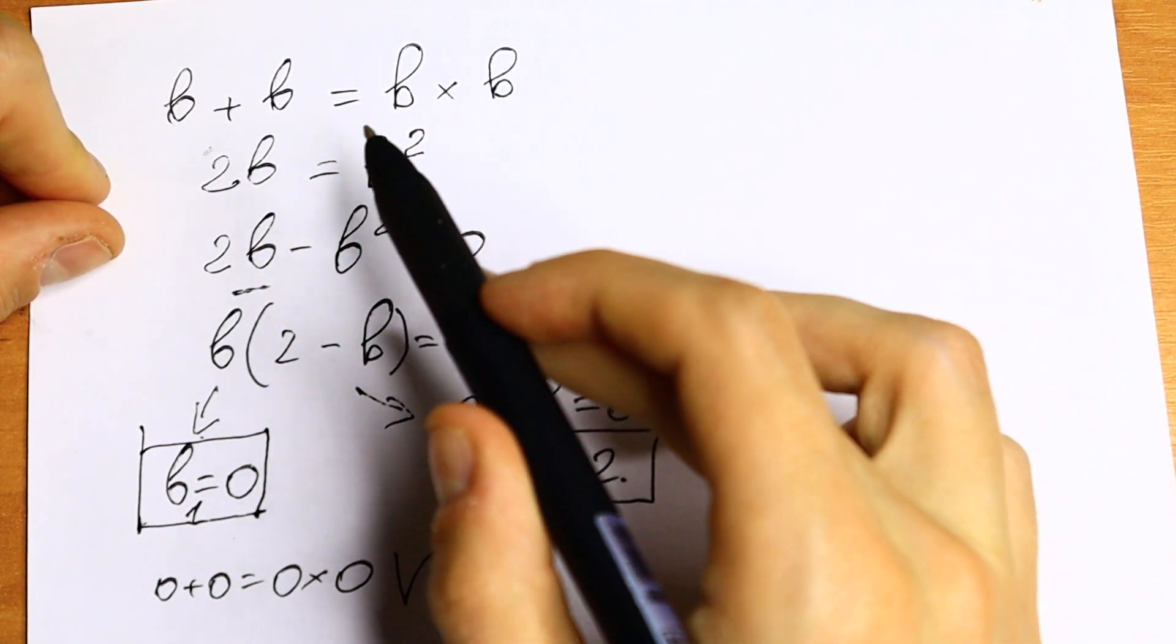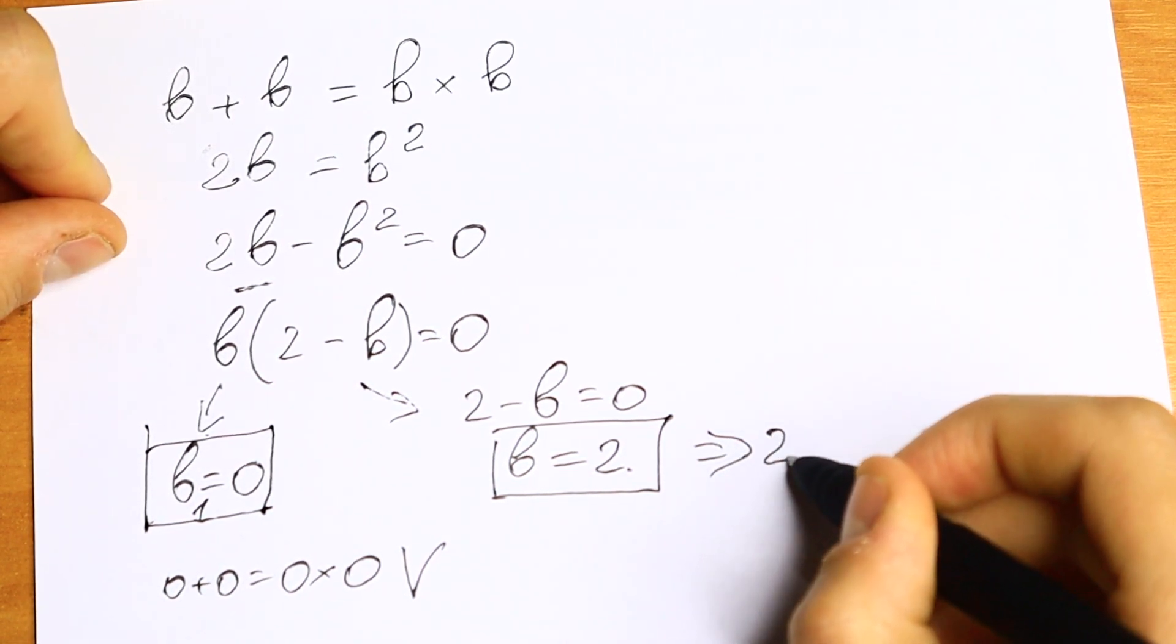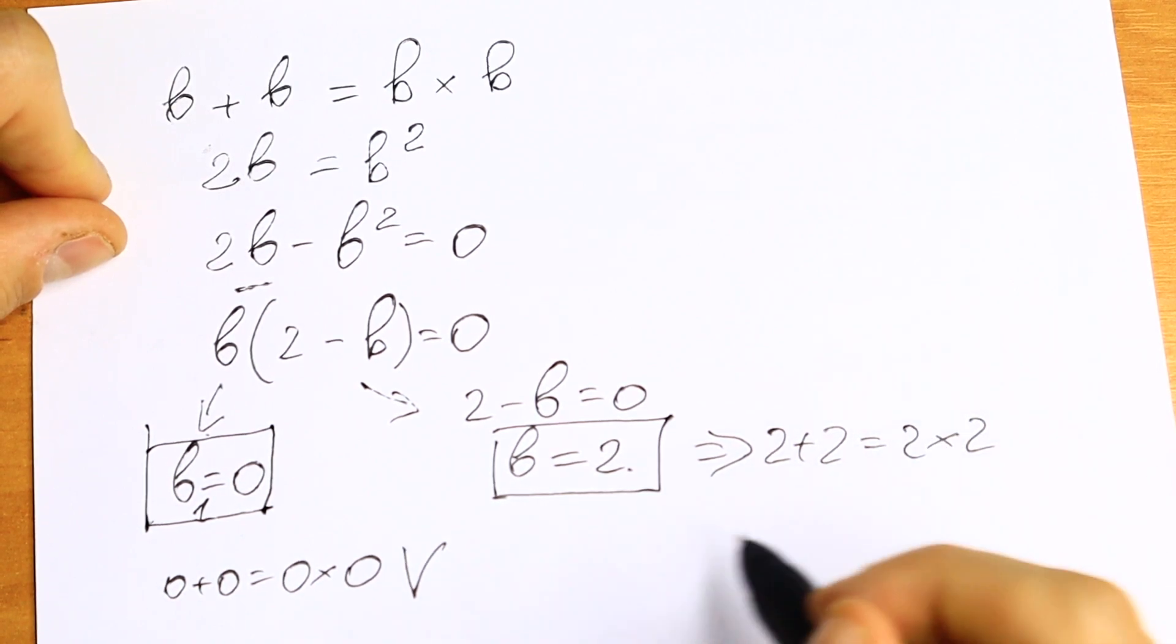We can plug in 2. We will have 2 plus 2 equals 2 times 2, which is correct.